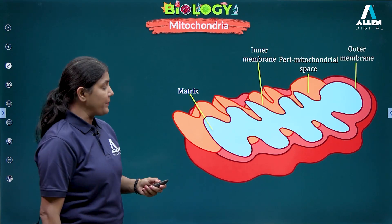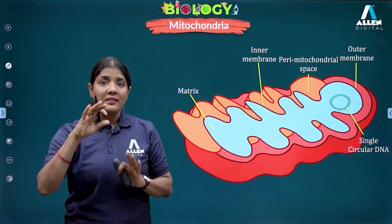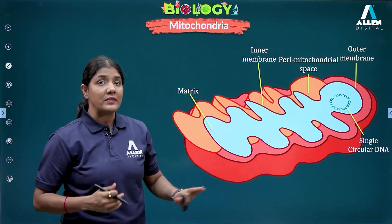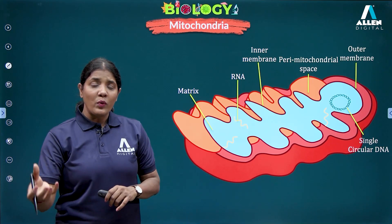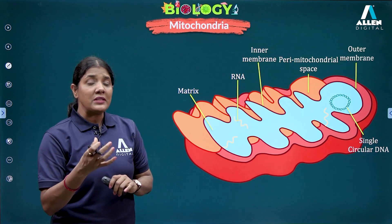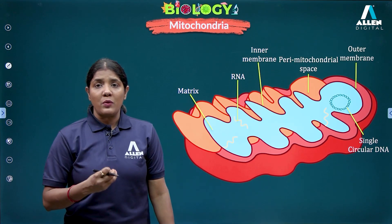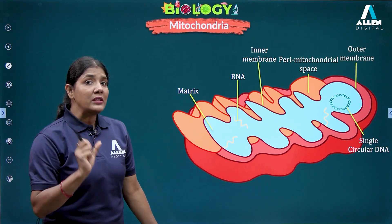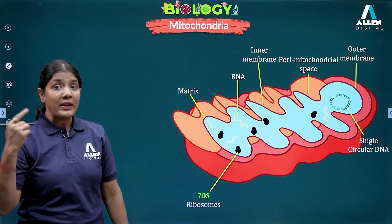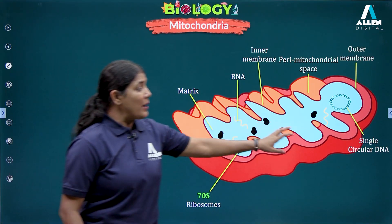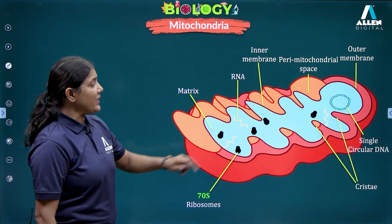Mitochondria has its own double-stranded circular DNA — unlike the nucleus, the DNA here is circular, not linear. It also has its own RNA. The DNA codes for proteins by first making mRNA, and then mRNA along with ribosomes synthesizes the proteins required by the mitochondria. For protein synthesis, mitochondria has 70S ribosomes.